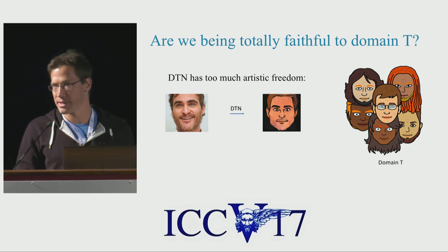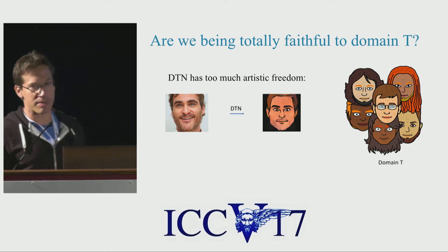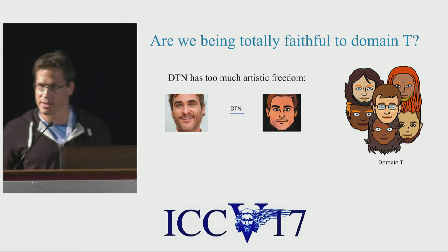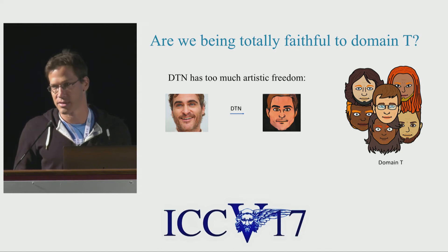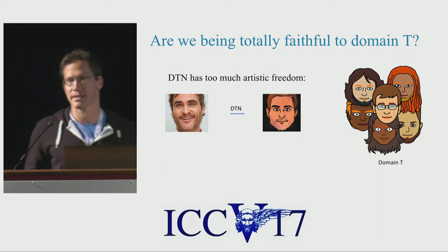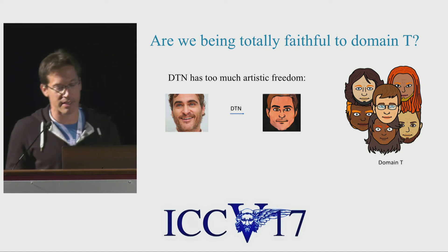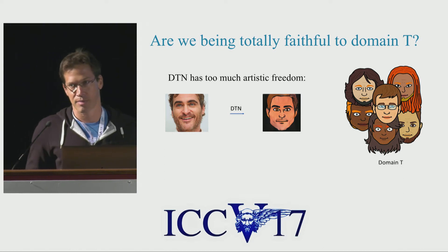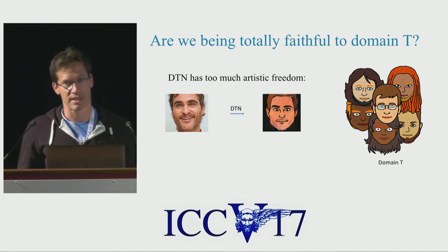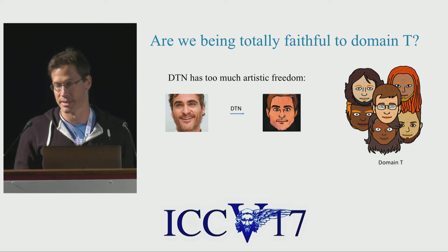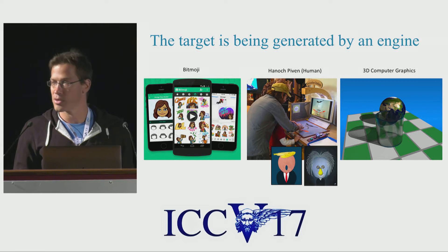This is what we did at ICLR 2017. We were able to create images using a method called DTN, Domain Transfer Network. The results are highly identifiable — you can tell immediately who you see in the image. But there is a problem: there is too much artistic freedom, and the output is not really part of the class that we seek to replicate.